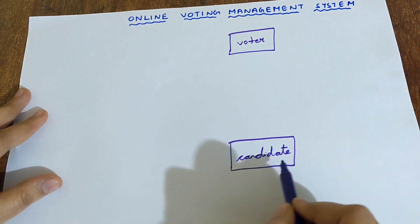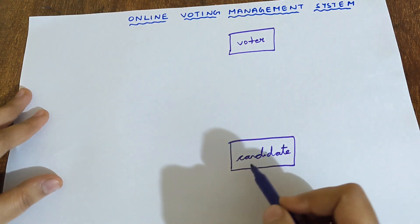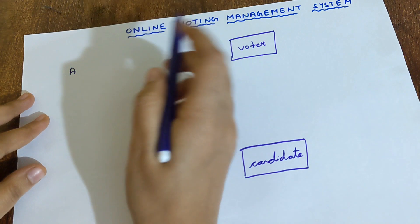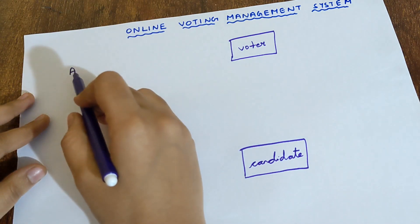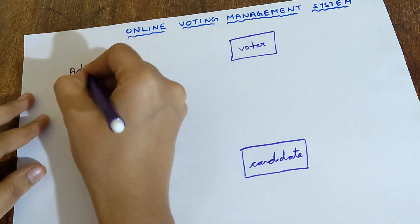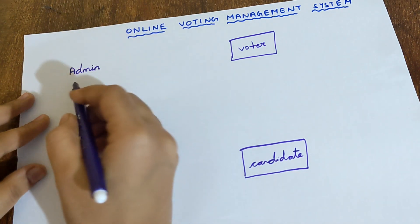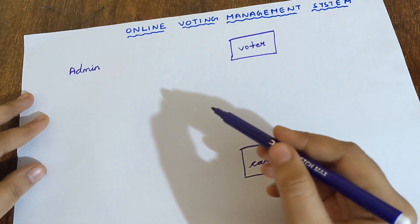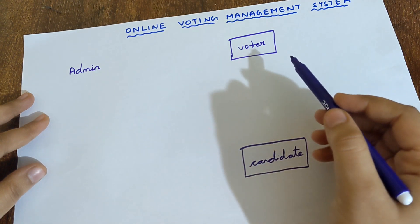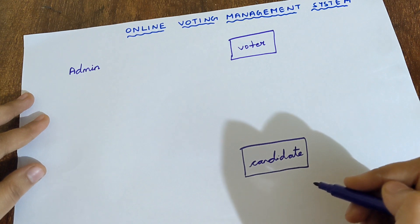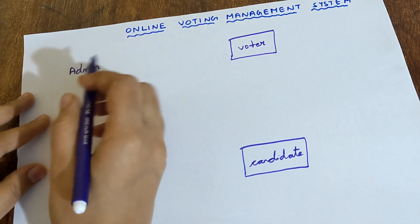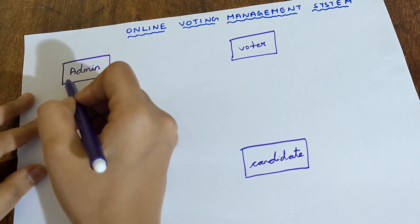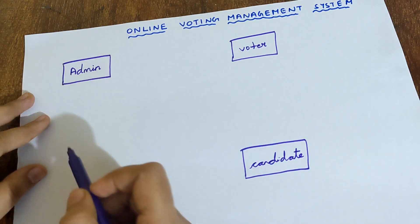The next entity is Admin. Because when it is Online Voting, online means an admin should be there who will be able to look into the information of the Voter and Candidate. The admin will check whether the information of the Voter and the Candidates are real or not. So admin is also a person, physically existing, therefore it is an entity, written inside a rectangular box.